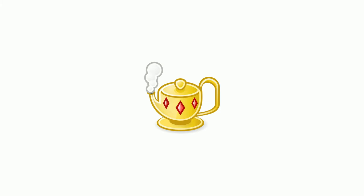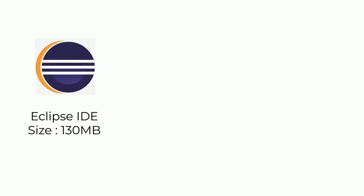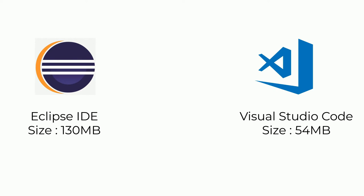Genie has used a compiler to run a program. If you want to download Eclipse, you can download Eclipse with the MinGW compiler, and you can download the compiler in Visual Studio.